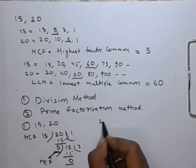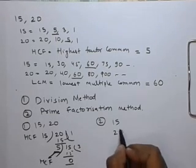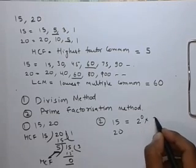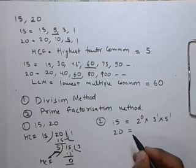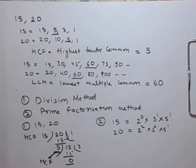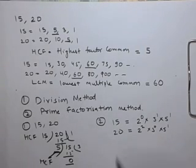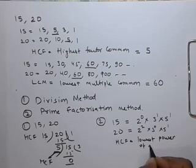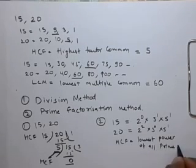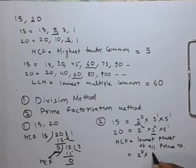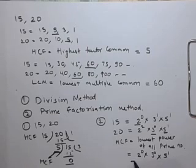In the prime factorization method, we will write the numbers 15 and 20 as powers of prime numbers. So, 15 can be written as 2 to the power 0, 3 to the power 1, 5 to the power 1. Similarly, 20 can be written as 2 to the power 2, 3 to the power 0, 5 to the power 1. GCF is the lowest power of all the prime numbers. So, GCF equals 2 to the power 0, 3 to the power 0, 5 to the power 1, which gives GCF = 5.